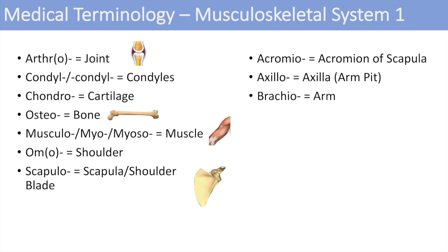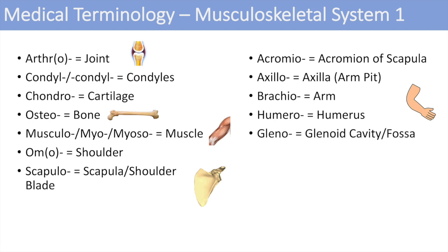The next one is brachio, which means the arm — you can think of the brachioradialis muscle or the brachialis muscle, which all have to do with the arm. The next one is humeral, which just denotes the humerus. The next one is gleno, which just denotes the glenoid fossa or glenoid cavity — the space between the humerus and where it attaches to the scapula. You can think of the glenohumeral fossa.